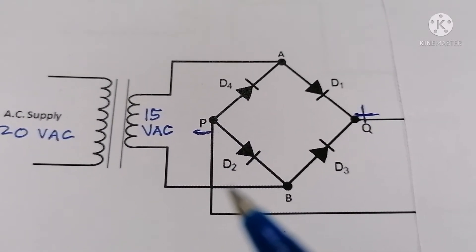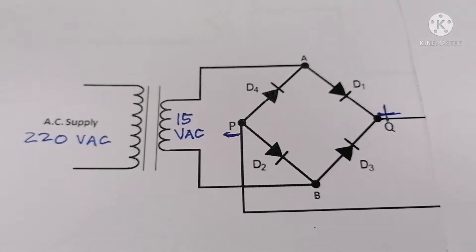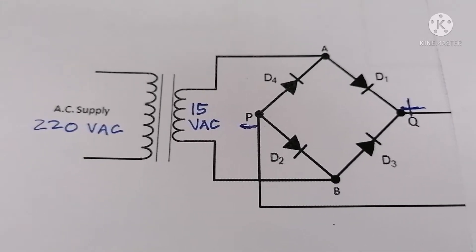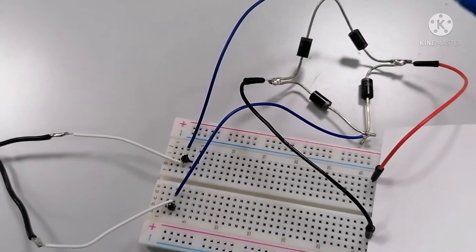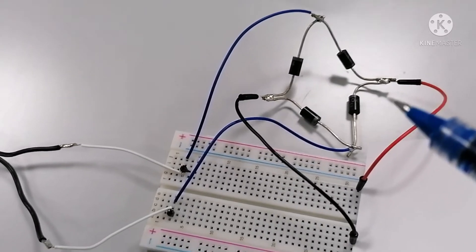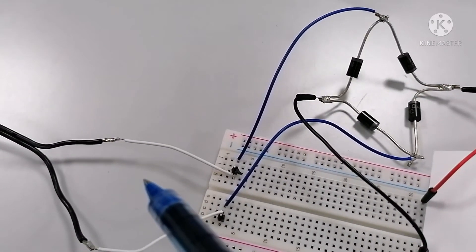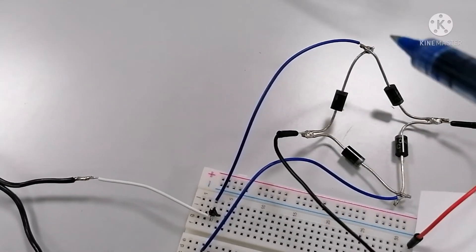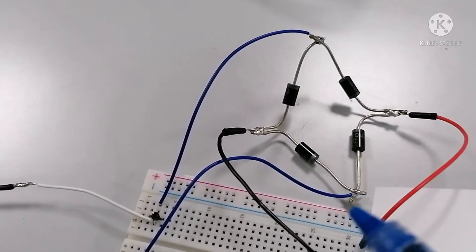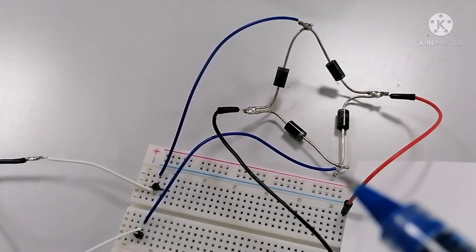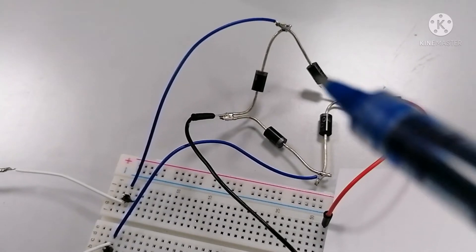So in this part I will tell you how the bridge rectifier responds to the AC voltage. Now we will start the actual explanation. These two wires is the input to the bridge rectifier which is 15 volts. This one is to point A and the other one is to point B. The output at the bridge rectifier is point Q and point B.